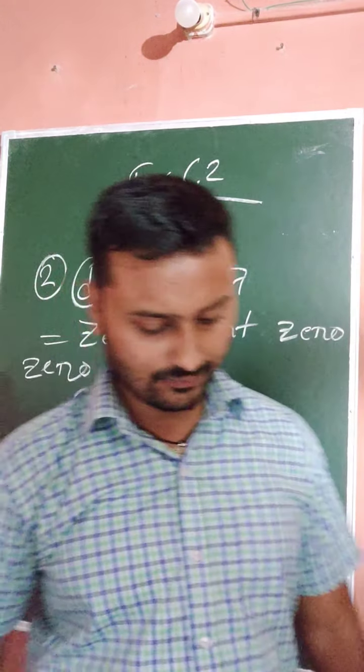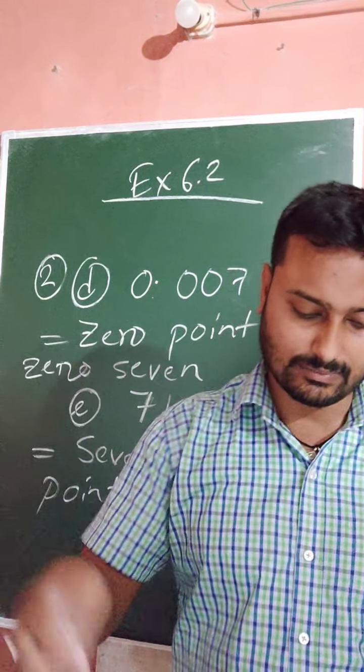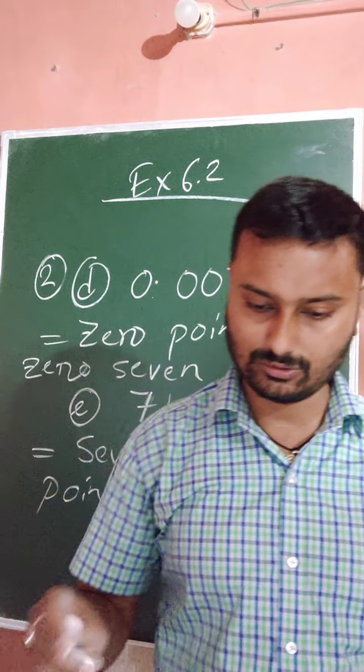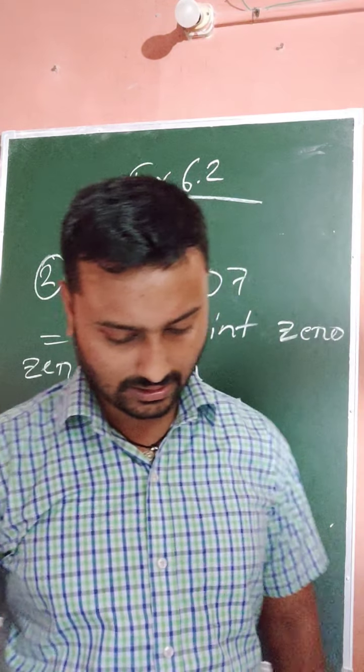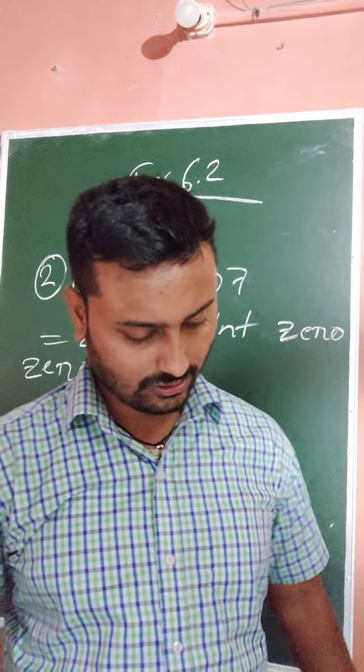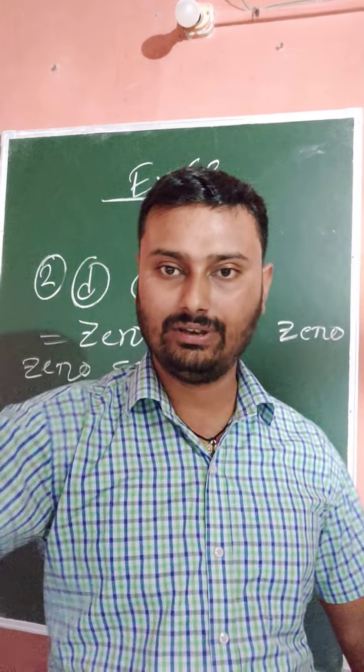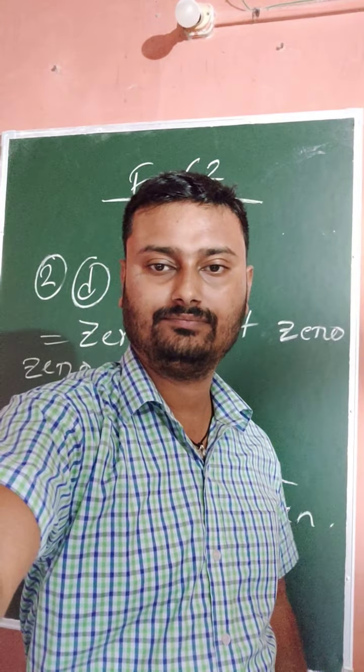Question number three is: write the following decimal numbers in the place value table. I will solve question number three in the next video, so please stay tuned.